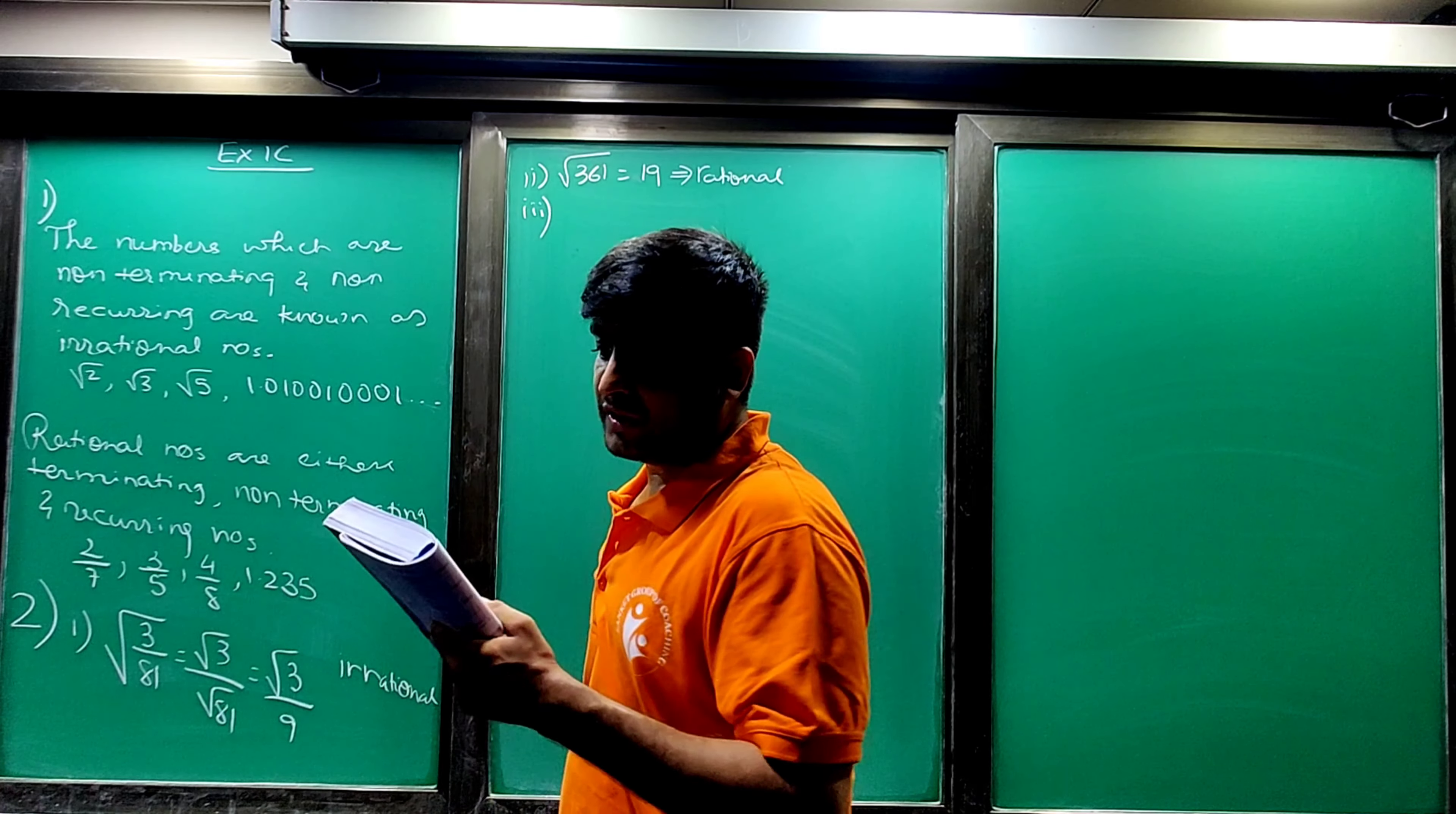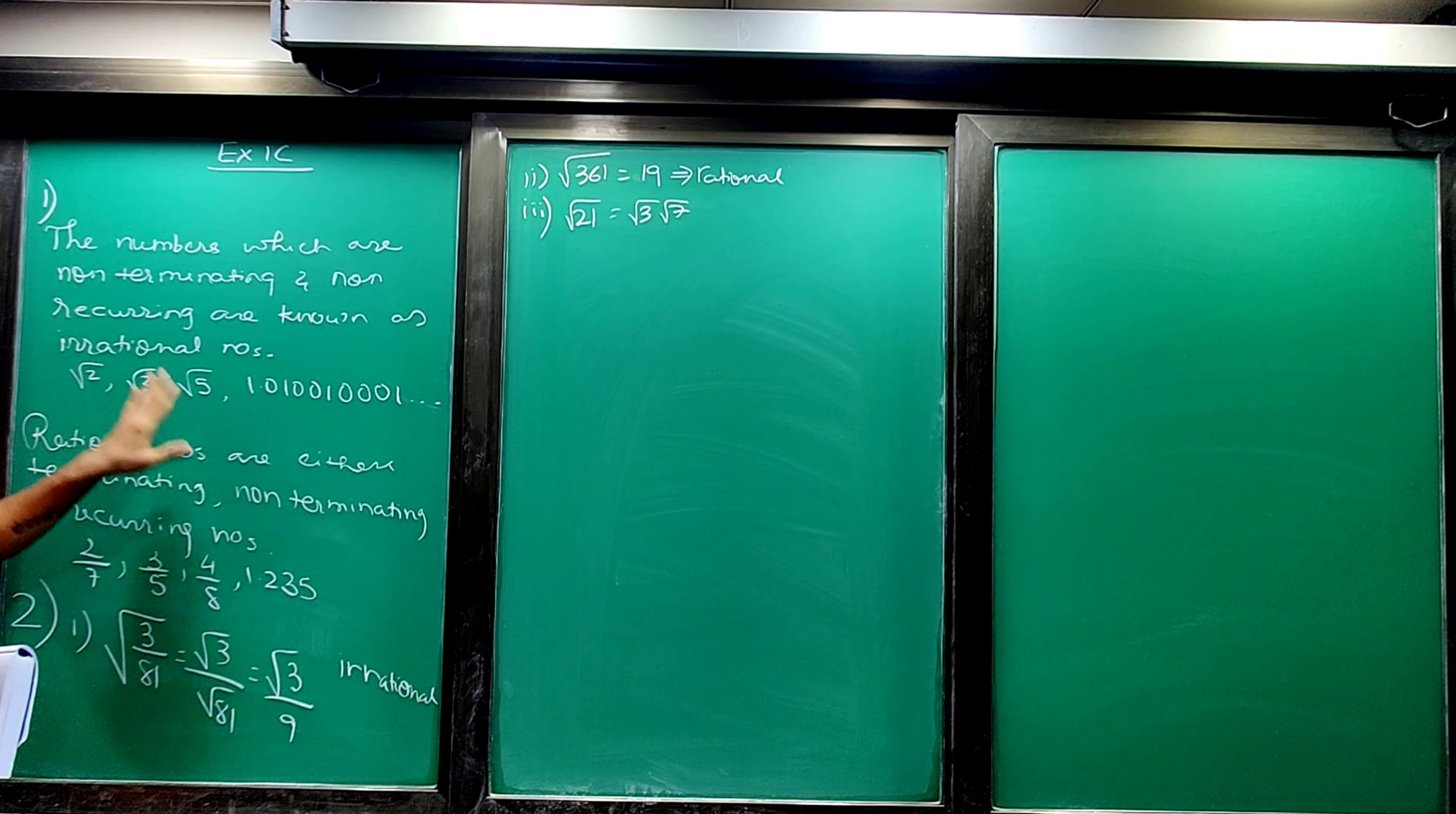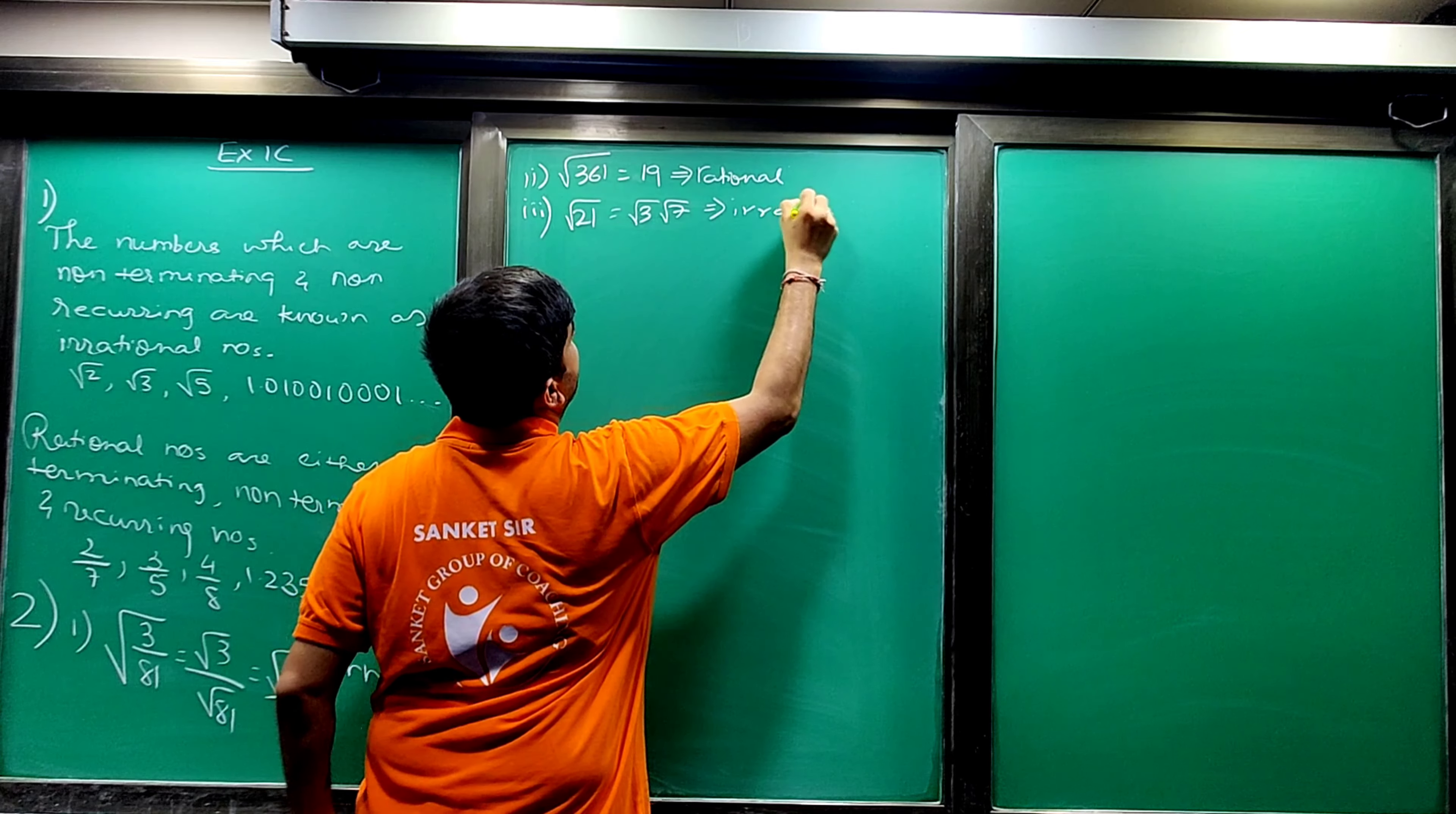Third dekho: root 21 which can be written as root 3 into root 7. Both are irrational numbers because they are non-terminating and non-recurring. So answer is irrational number.